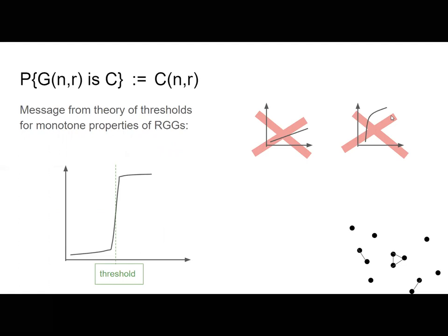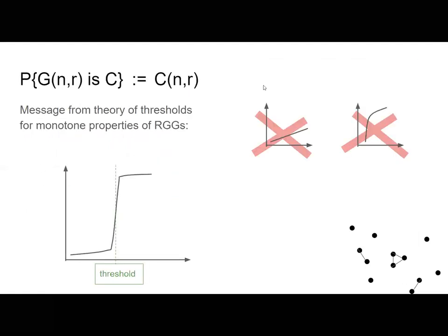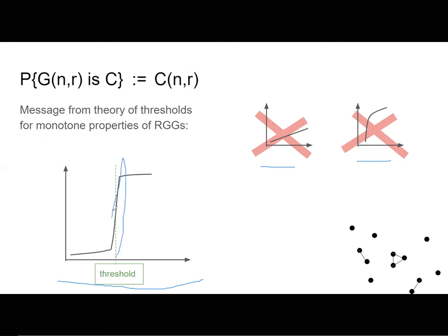But how does that increase happen — linearly, or in some other way? There is a rich theory of thresholds for monotone properties in random geometric graphs. It tells you there will be a threshold: a very thin range of values for r or n when this probability jumps from essentially zero to essentially one. And that's exactly what we've been observing.